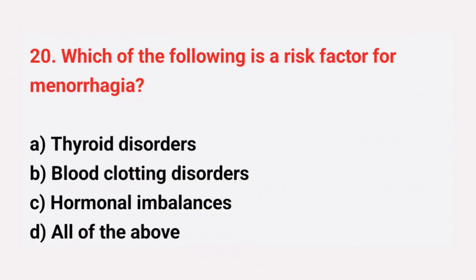Question number 20: Which of the following is a risk factor for menorrhagia? The right answer is option D, all of the above.